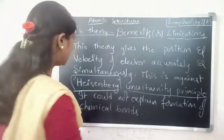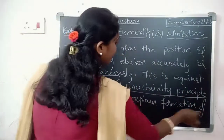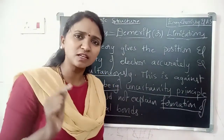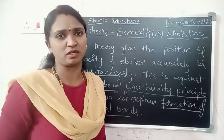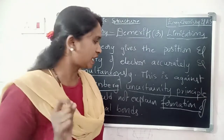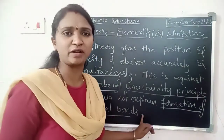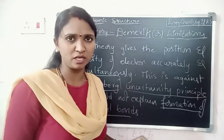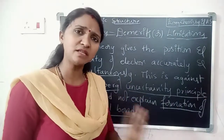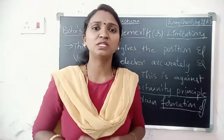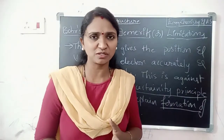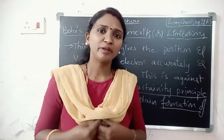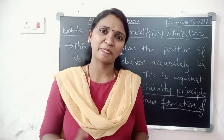The sixth demerit is that this theory could not explain the formation of chemical bonds. Only the valence electrons are involved in chemical bonding, but Bohr did not explain anything about how electrons participate in chemical bond formation. These are the merits and limitations of Bohr's atomic theory. I hope you understand this topic. We will meet again in the next class. Thank you.